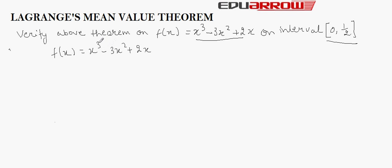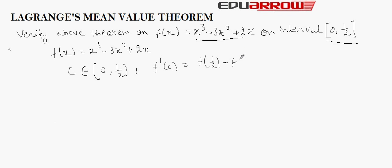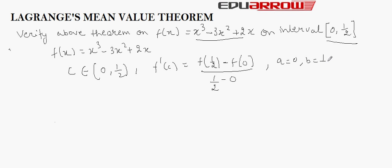Now we have to check the third property, that is, there exists a C belonging to open interval (0, 1/2) such that F'(C) is equal to F(1/2) minus F(0) divided by B minus A, that is 1/2 minus 0. Here, A is equal to 0 and B is equal to 1/2.